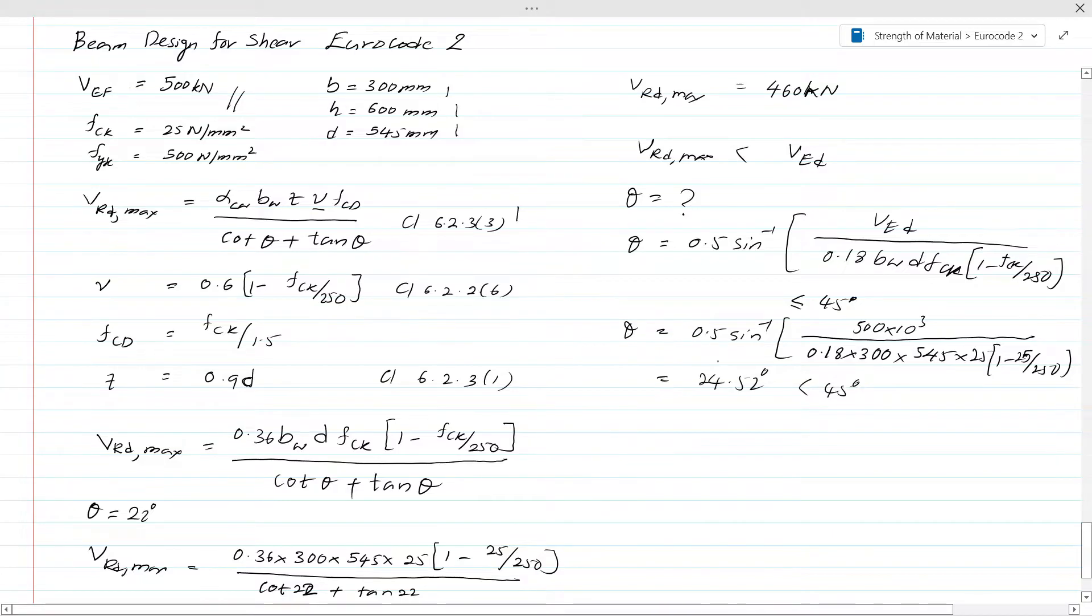Now we know θ is less than 45. Now we have calculated θ, so we can calculate the shear reinforcement area or the shear links. Shear links can be calculated from this equation as A_sw/s equals VEd divided by (0.78 × d × f_yk × cot θ). All the parameters we know, so we can calculate the shear reinforcement area. We have to substitute this value here.